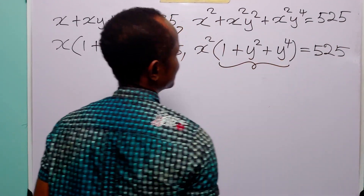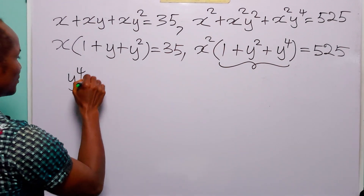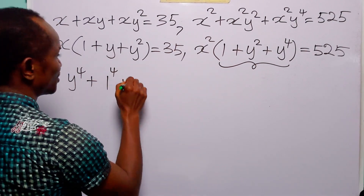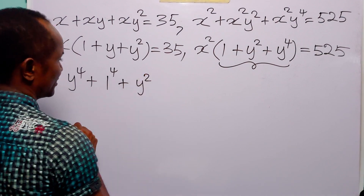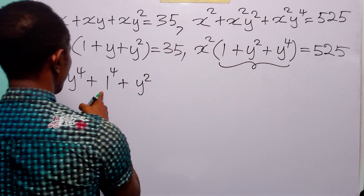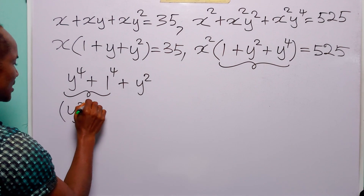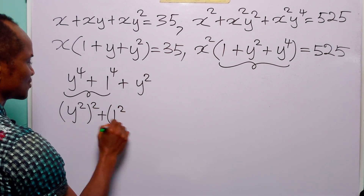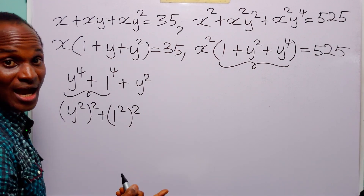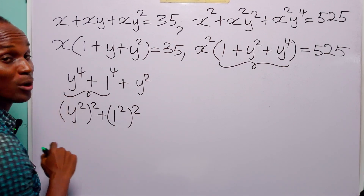Now let us look at this. We can write y to the power of 4 plus 1 to the power of 4 plus y squared. You know that 1 to the power of 4 is still equal to 1. We can also write these two as y squared squared plus 1 squared squared, because to remove the brackets, all we have to do is multiply these two powers, and 2 times 2 is equal to 4.